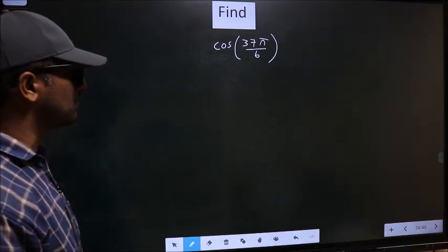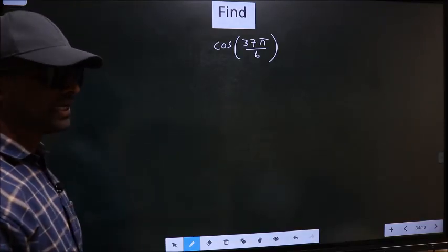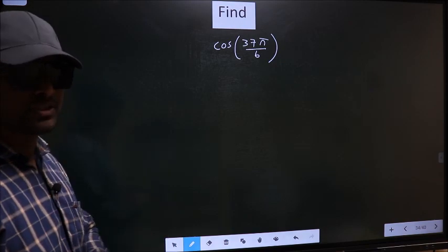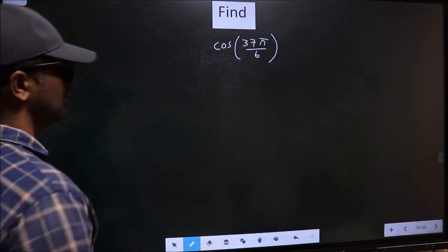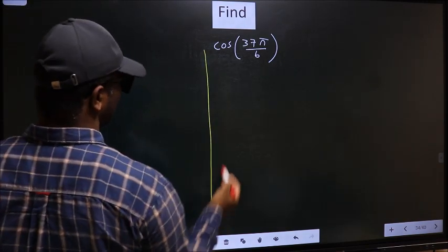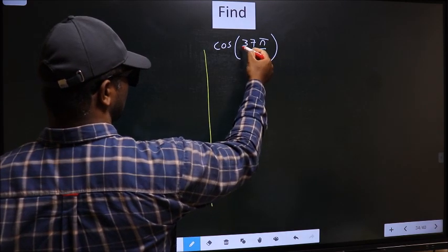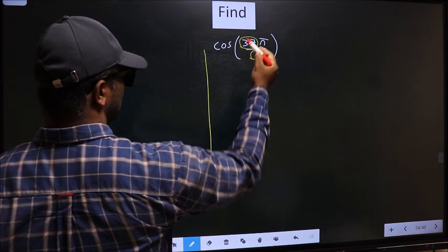Find cos(37π/6). To find this, we should follow this method. In the denominator, we have 6. In the numerator, we have 37.